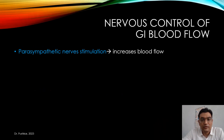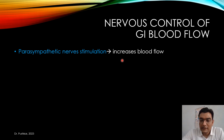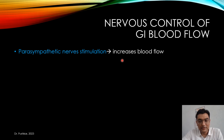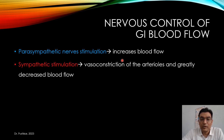Now we will look at the nervous control of GI blood flow. There are two important types of nervous control: parasympathetic and sympathetic. Parasympathetic nerve stimulation increases blood flow, helping in the digestion of a meal. The parasympathetic nervous system relaxes us and increases blood flow in our GI tract.